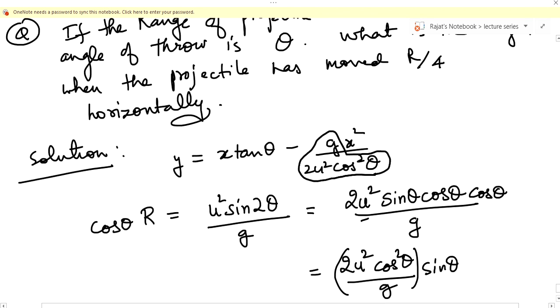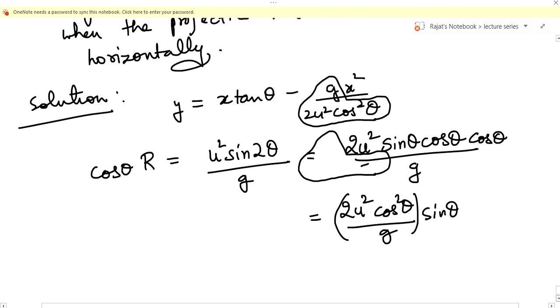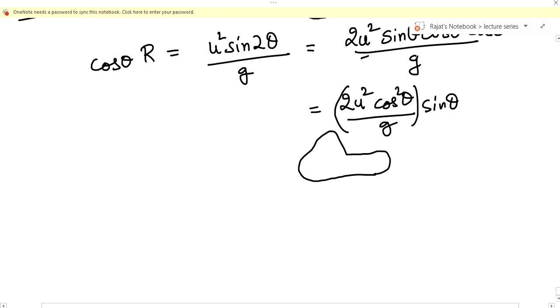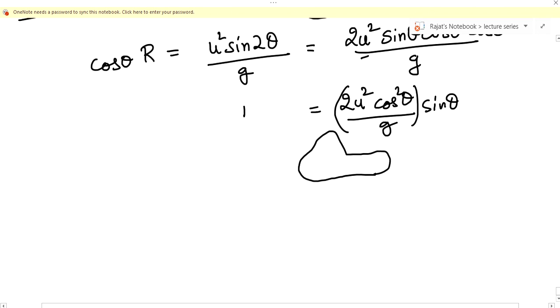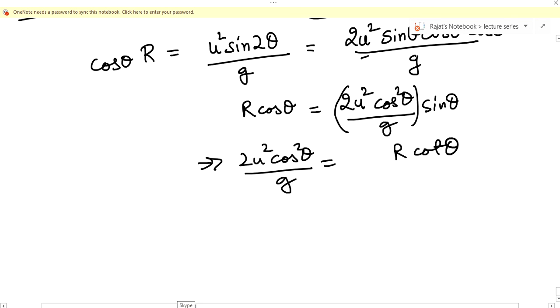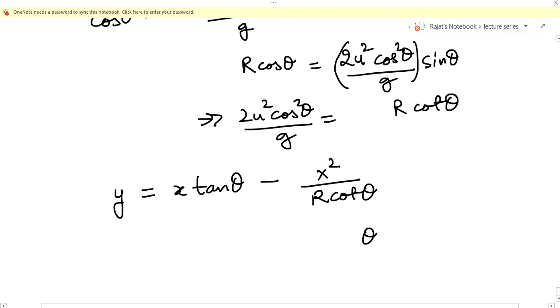Okay, so let's substitute this. I can say this is equal to R cos theta, or 2 u squared cos squared theta upon g is equal to R cot theta. Fair enough. So let me put it here: y equals x tan theta minus x squared upon R cot theta.